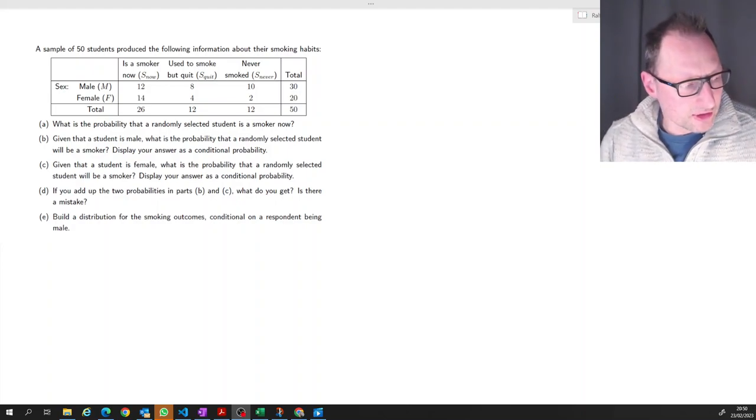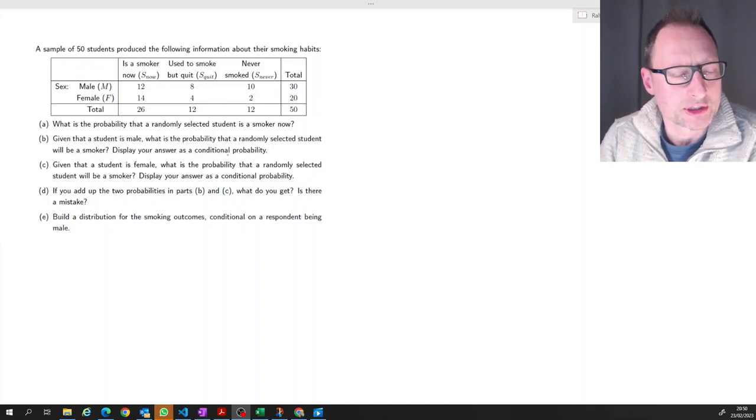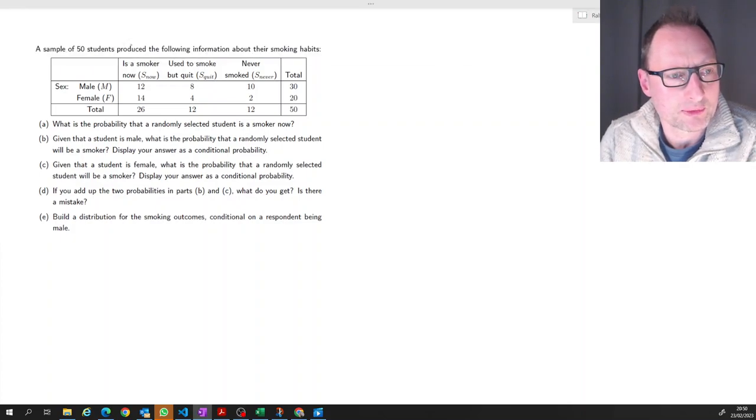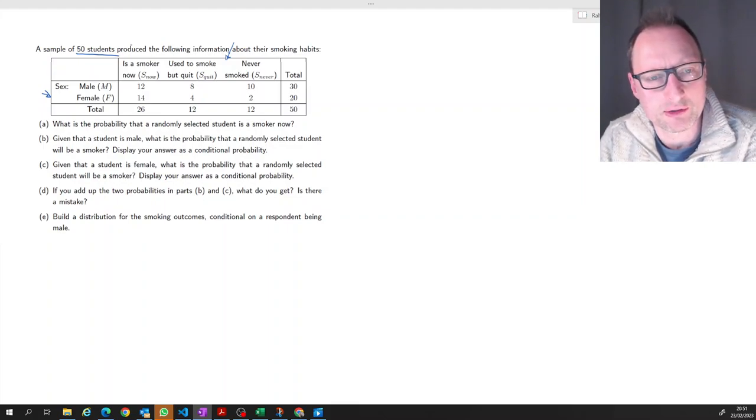This is an exercise to make us think about probabilities and particularly conditional probabilities. So we have a table of information that comes from a sample of 50 students who've been asked about their gender and about their smoking habits, in particular whether they are smoking now, whether they used to be a smoker but quit, or whether they have never smoked.